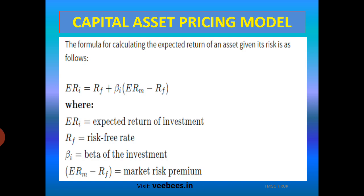The formula for calculation of expected return as per CAPM is: Expected Return = RF + Beta × (RM − RF). Here, RF means risk-free rate — that is the rate of return if there is no risk.